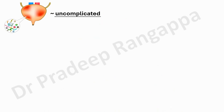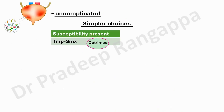Now we look at what IDSA recommends for uncomplicated UTI. These patients are occasionally seen by us — uncomplicated UTI is predominantly confined to the bladder, which we call cystitis or uncomplicated cystitis. I want the audience to pay attention because IDSA has put emphasis on trimethoprim-sulfamethoxazole, which in India is currently available as an IV formulation — co-trimoxazole. IDSA puts this as one of the choices for CRE as a carbapenem-sparing drug.